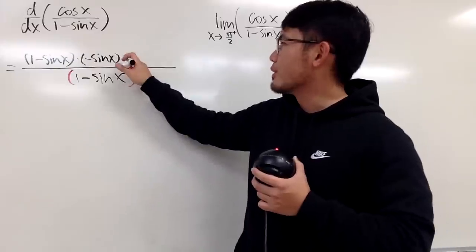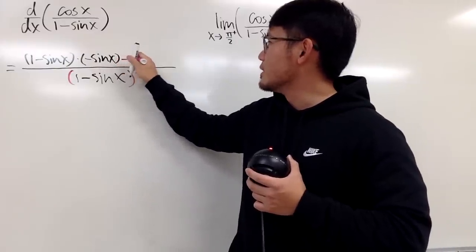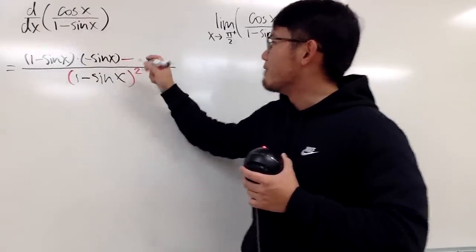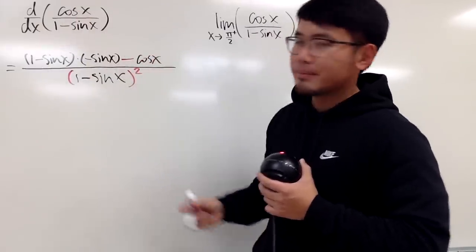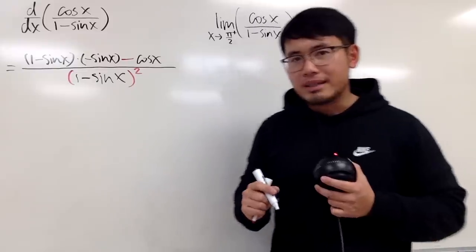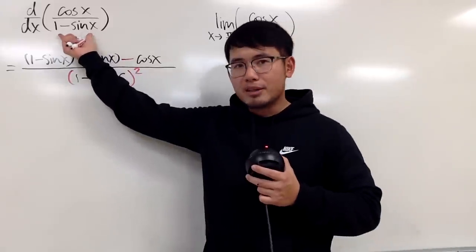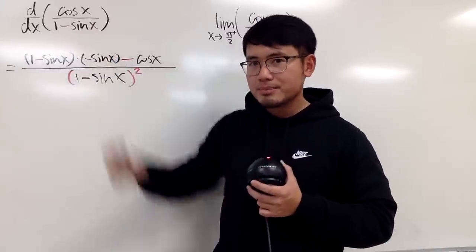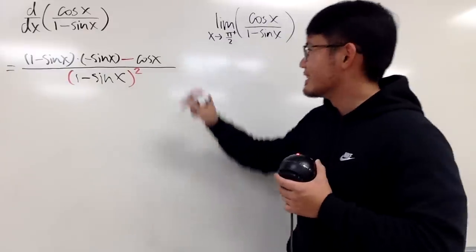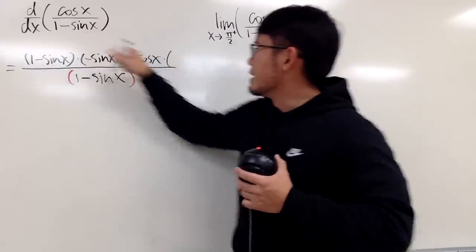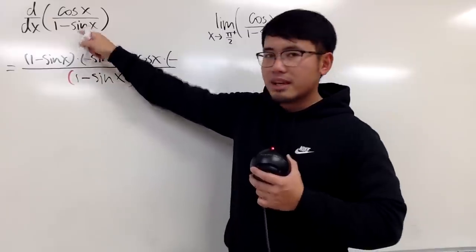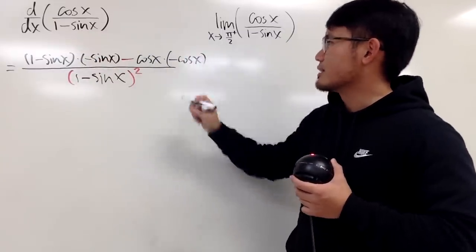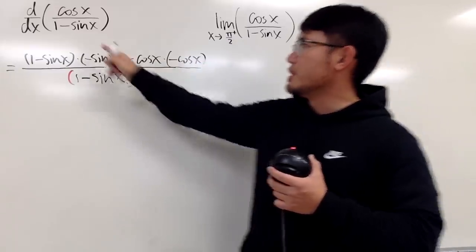And then to continue, you are going to minus, because we are using the quotient rule right here. We put down the top function, which is cosine x, and then we multiply this by the derivative of the bottom. The derivative of 1 is 0. The derivative of negative sine x is negative cosine x. So you first maintain the negative, and the derivative of sine x is cosine x, so that's why we have a negative cosine x here for the derivative of the bottom.